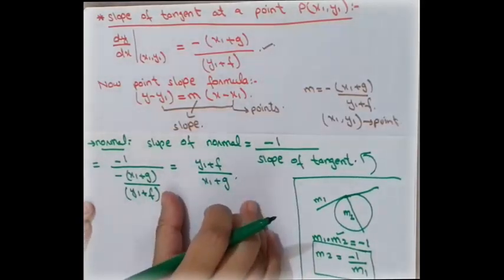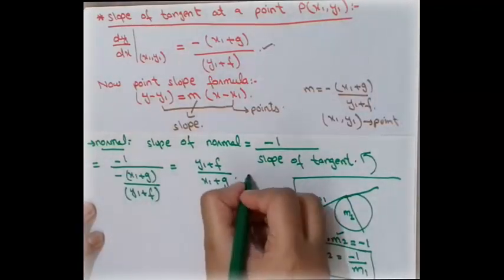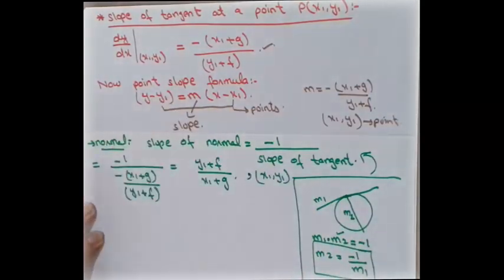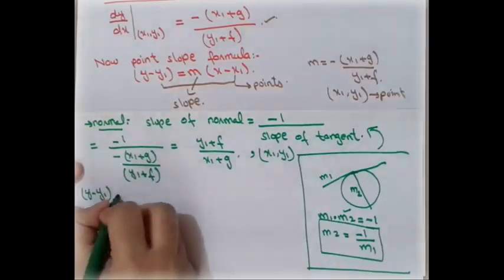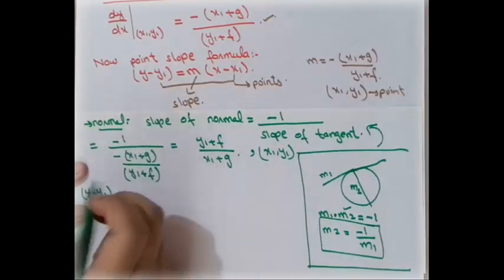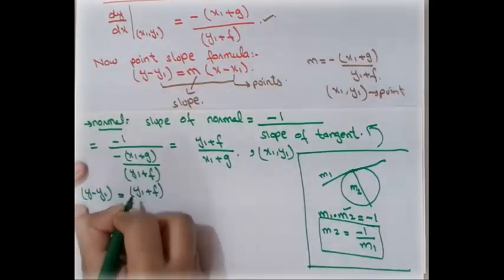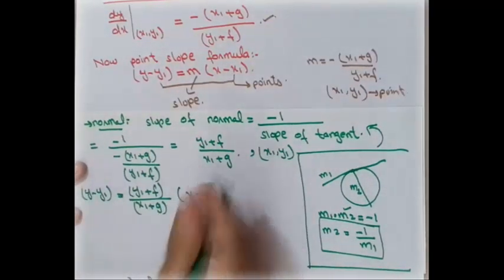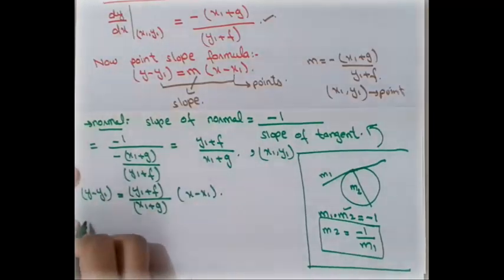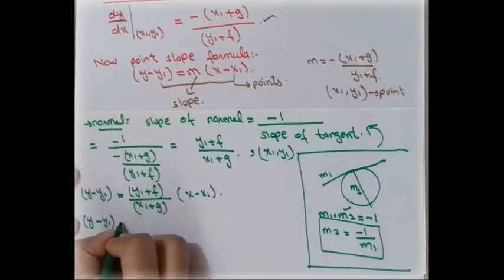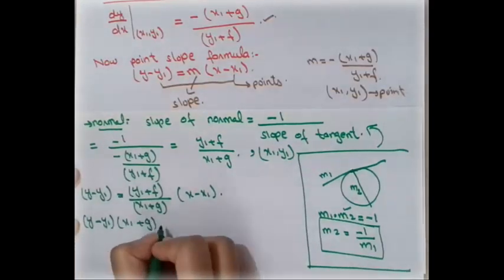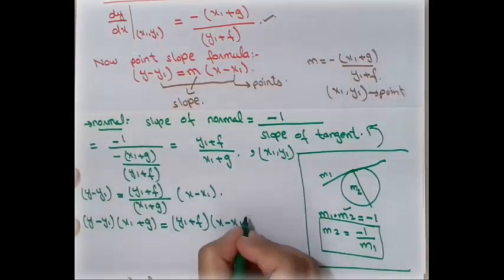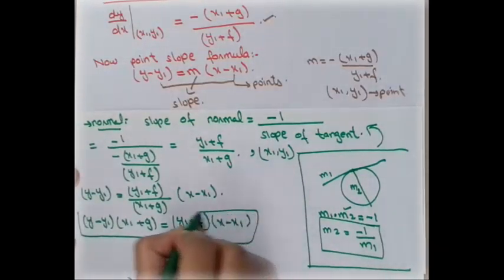Substituting into the point-slope formula y − y1 = [(y1+f)/(x1+g)] · (x − x1), and multiplying both sides by (x1+g), we get the required equation of the normal: (y − y1)(x1 + g) = (y1 + f)(x − x1).